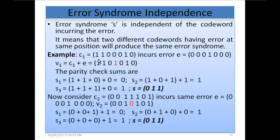So let's go through an example. C1 is equal to 1, 1, 0, 0, 0, 1, 0. It incurs error E equal to 0, 0, 1, 0, 0, 0, 0, meaning error has occurred at bit location number 4. So this 0 has been toggled from 0 to 1, giving received word 1, 1, 0, 1, 0, 1, 0.